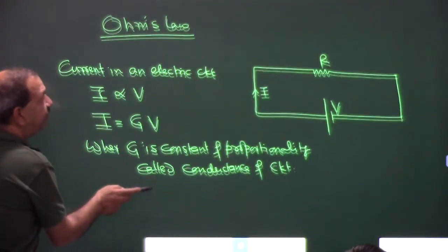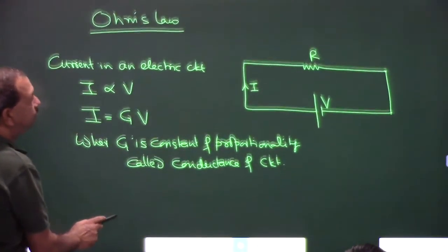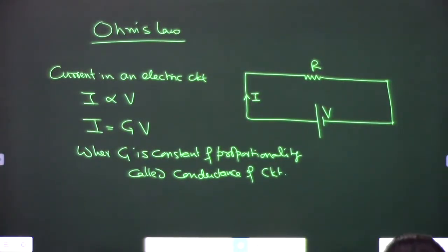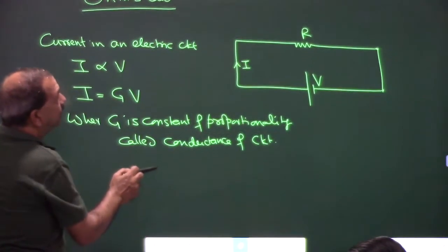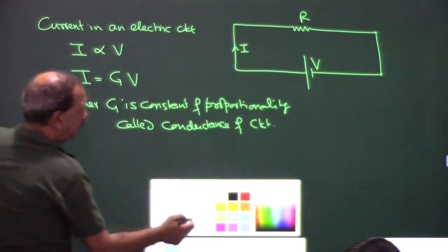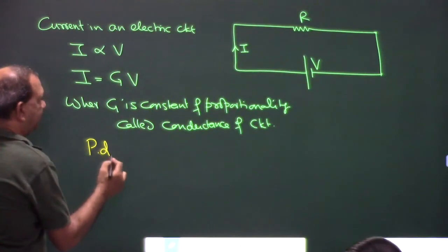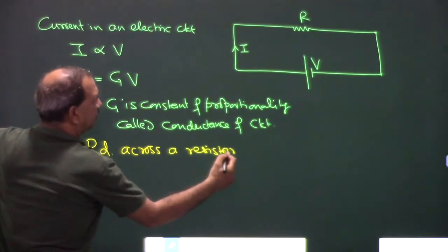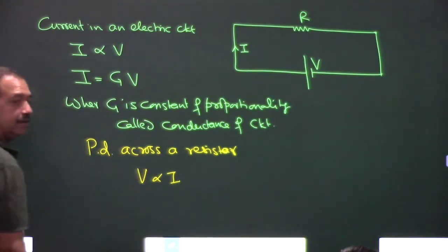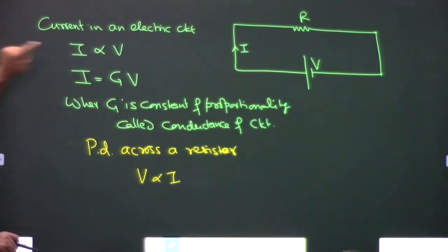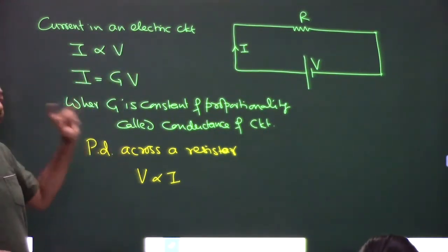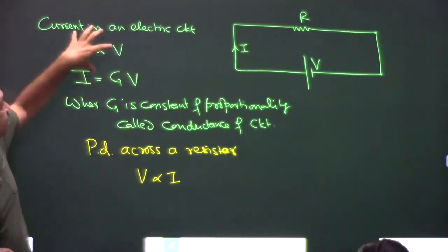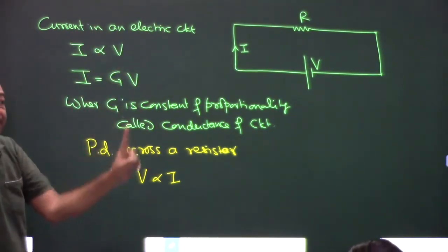Both representations are valid and are not different things — they are the same. It depends on how you look at the situation, just like in a train: from inside, it appears the platform is moving; from outside, the train is moving. Similarly, I proportional to V is used when talking about the complete circuit, and V proportional to I is used when talking about a particular resistor.